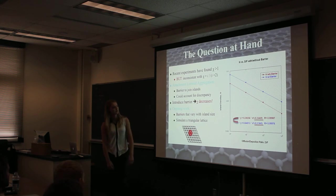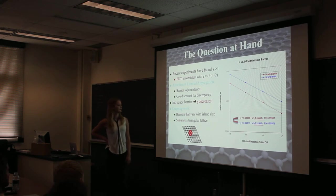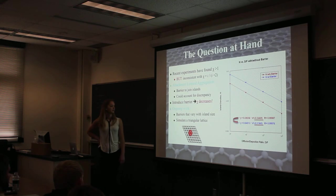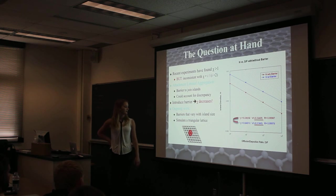But when I ran the simulations, which I showed again on the right, the blue line shows a barrier for island joining, and instead of chi increasing, chi actually decreased to negative 0.31, which totally ruins this theory that just a single barrier could cause this discrepancy in the chi value. What I'm going to be working on later this summer is barriers that vary with island size and simulating more complicated lattices to try to account for this inconsistent result.